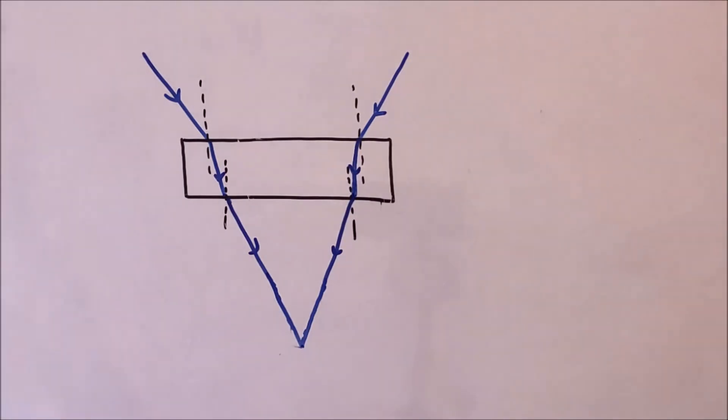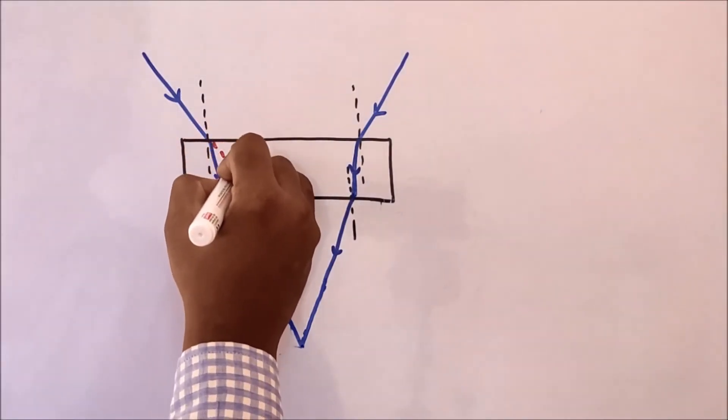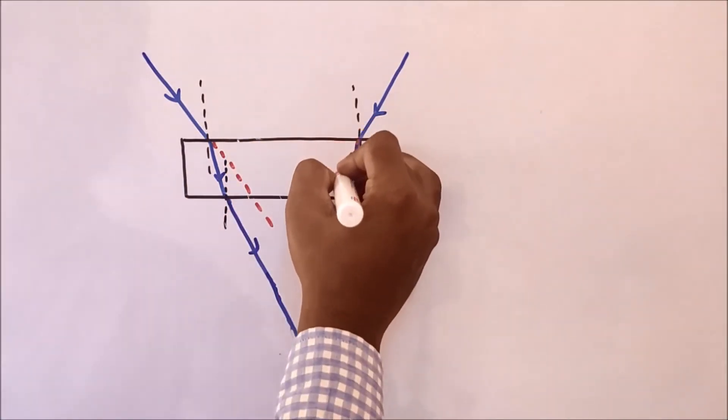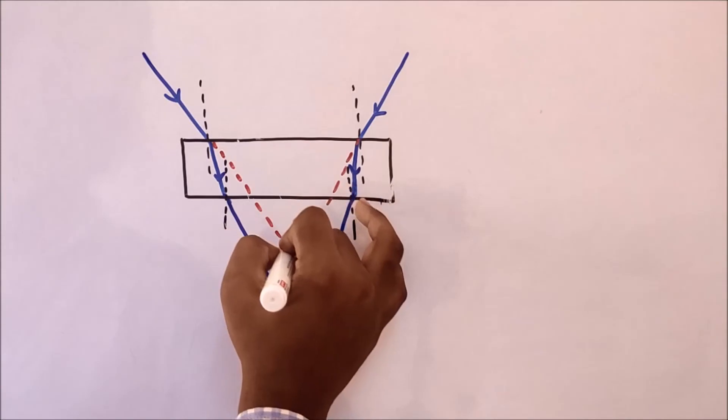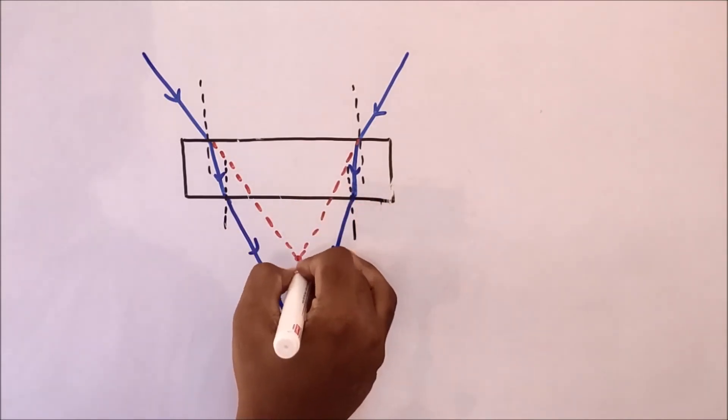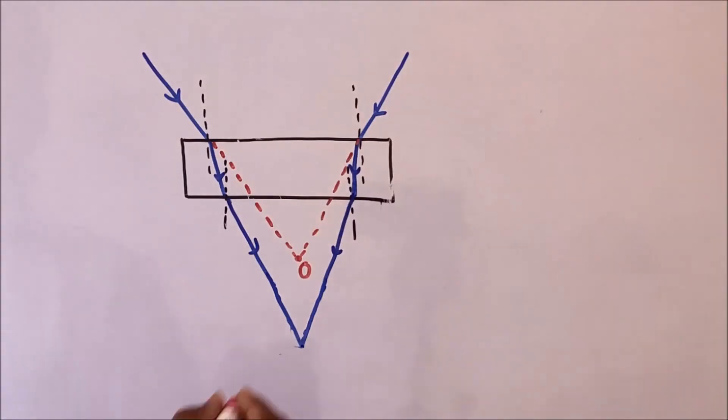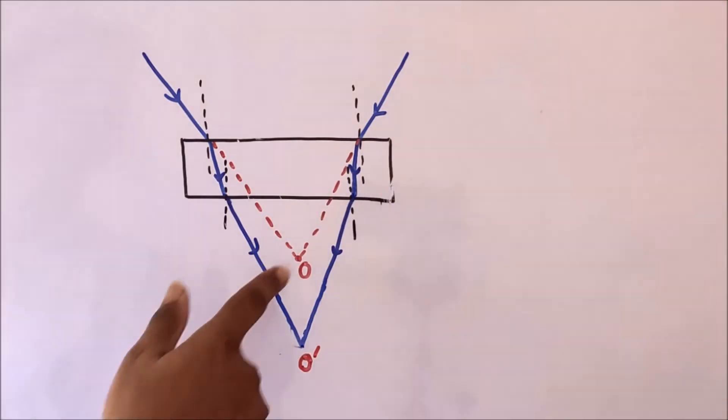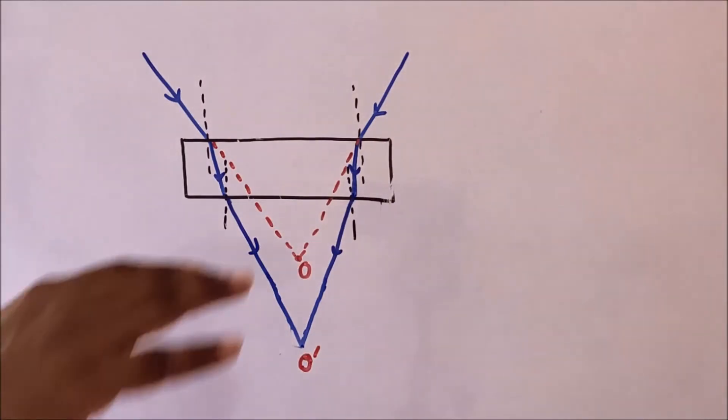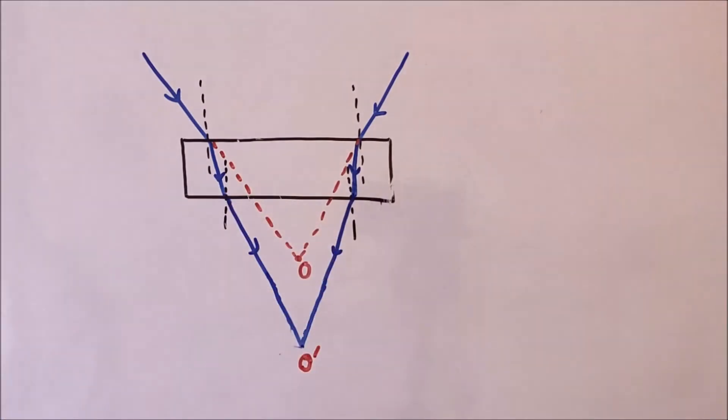Just we have to answer which of the option is correct. If suppose the glass slab is absent, so what would happen? These two rays would have met somewhere at this point. Let us call this point as O. But since the glass slab is present, they are meeting at this point. Let us call this as O dash. So what happened to the point O due to the presence of glass slab? The point of intersection has shifted away from the glass slab. So which option is correct? The correct option is B, shifts away from the slab. I hope you have understood the question.